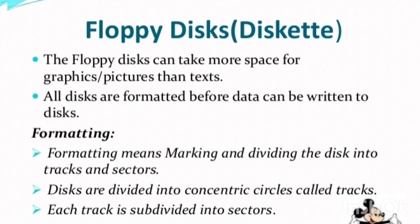All floppy disks or diskettes are formatted before data can be written on them. Formatting means marking and dividing the disk into different units. The floppy disk is divided into tracks and sectors. The disk is divided into two types: the concentric circle is called the track, and the track is also subdivided into sectors — that is, tracks and sectors.